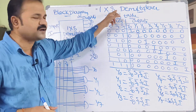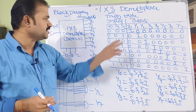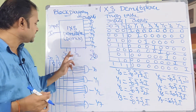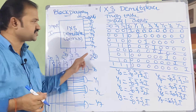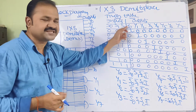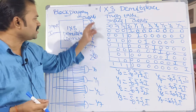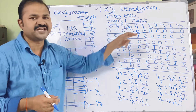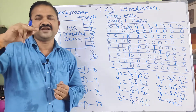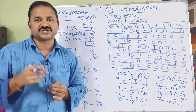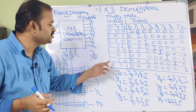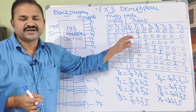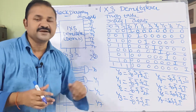This is the truth table for the 1 by 8 demultiplexer. We have 2 columns: the first column is inputs — the selection inputs S0, S1, S2 — and the outputs are from Y0 to Y7. Since we have 3 inputs, we will have 2 power 3 = 8 combinations, from 0 to 7. In binary notation, 0 is 0-0-0 and 7 is 1-1-1.